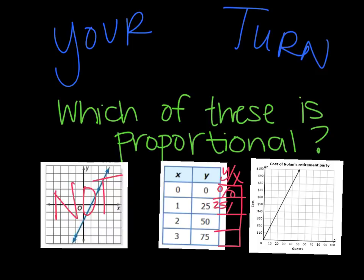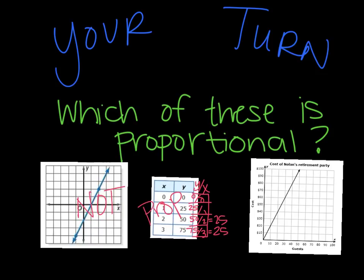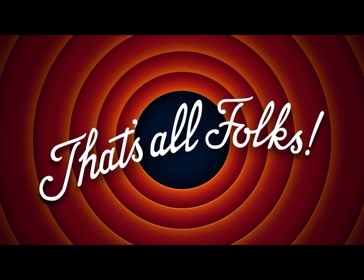So 25 over 1 is just 25. 50 over 2 simplifies to 25. 75 over 3 simplifies also to 25. So this second one, this table, would be proportional. And last but not least, we have this graph. It is proportional. It is a straight line through the origin. And that is all, folks.